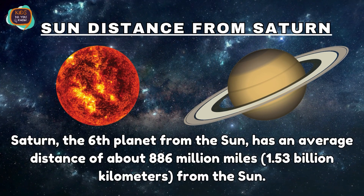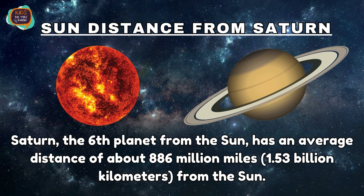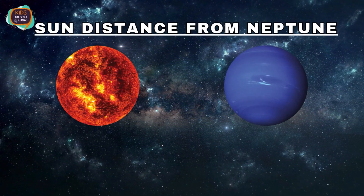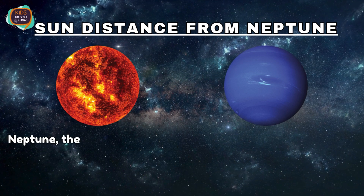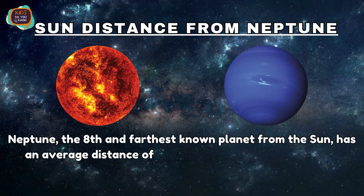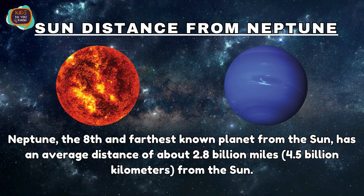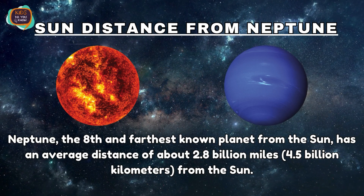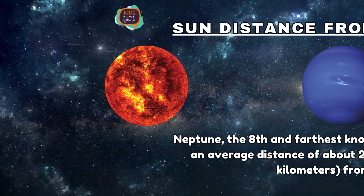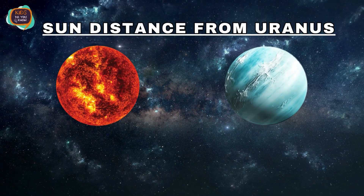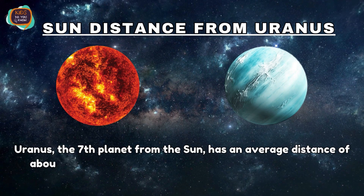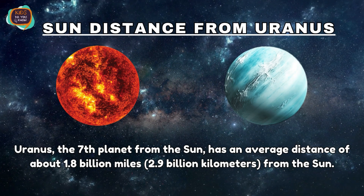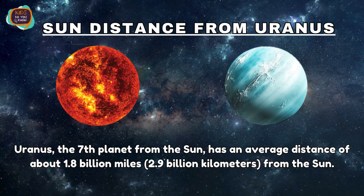Uranus has an average distance of about 1.8 billion miles, or around 2.9 billion kilometers from the Sun.